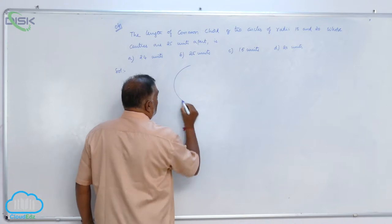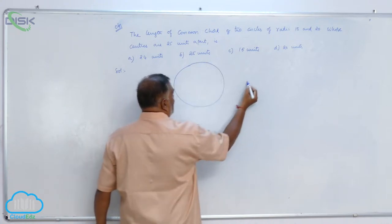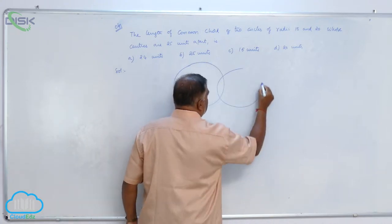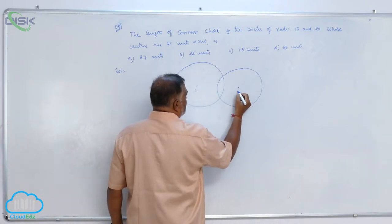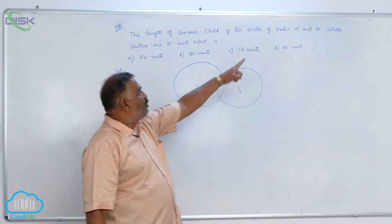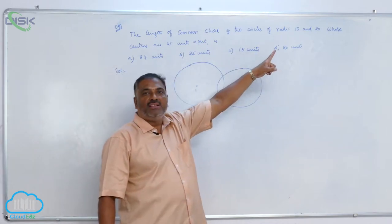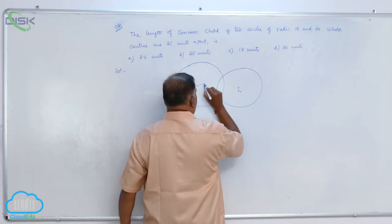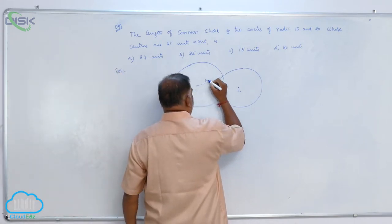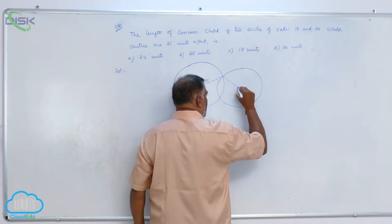Now let us draw a circle like this. One more circle will be like this. This is C1, this is C2. One is of radius 15, second one is of radius 20. So this is going to be 20 and this is going to be 15.